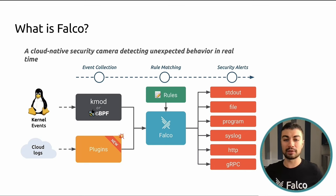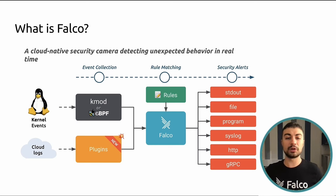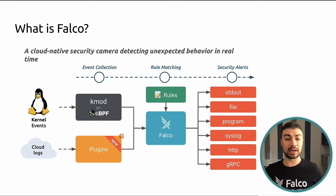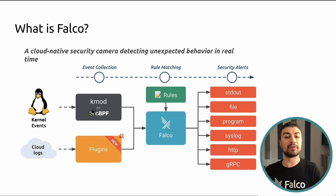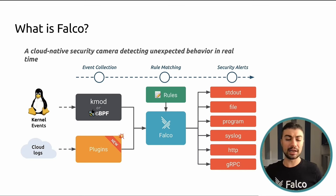Although the main focus of Falco remains container and endpoint security, Falco is also dramatically expanding its use cases in cloud security. For example, Falco can now collect cloud logs from AWS and GCP and let you write runtime security policies on top of them. Falco is also the most widely adopted runtime security project for Kubernetes and offers first-class integration for it.